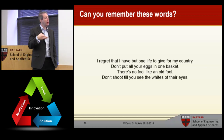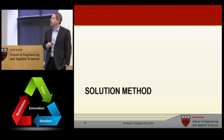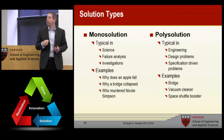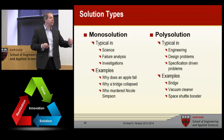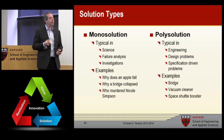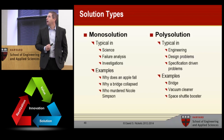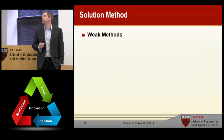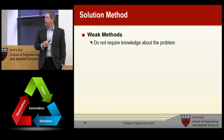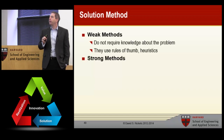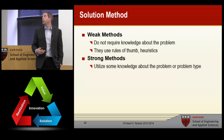So we've talked about problem search and representation — let's talk about solution method. There are really two areas of solution. On the left is mono solution — typical in science and failure analysis — for example: why does an apple fall, why does a bridge collapse, who murdered Nicole Simpson. These have a single answer. On the right are poly solutions, very typical in design or engineering — while there's probably only one way for a bridge to collapse, you could build a bridge in many different ways. There are also two types of solution methods: weak methods, which don't require any knowledge about the specific problem and use rules of thumb or heuristics, and strong methods, which utilize some knowledge about the specific problem or problem type.